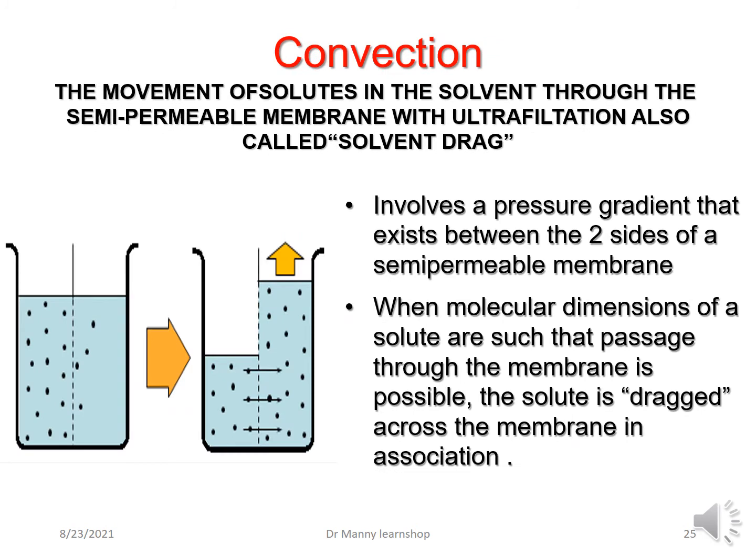Then there's convection — also known as solvent drag. Convection is the movement of solutes in the solvent through a semipermeable membrane with ultrafiltration. It involves a pressure gradient between the two sides of the membrane. When the molecular dimensions of the solute are such that passage through the membrane is possible, the solute is dragged along through the membrane with the solvent. If solutes are too big to go through the semipermeable membrane, they won't be dragged along — only small solutes will be dragged with the solvent. This is convection, also known as solvent drag.